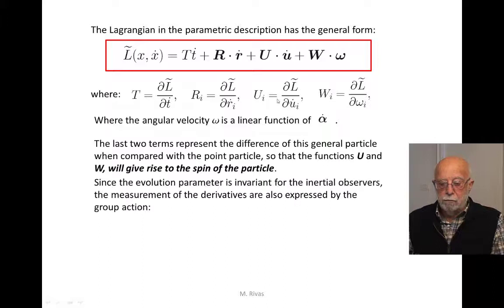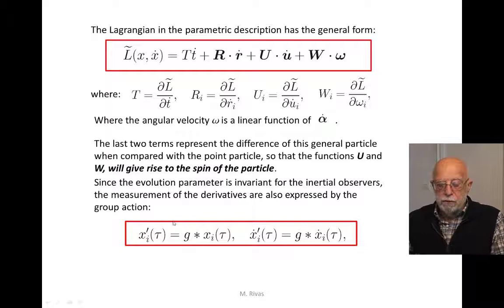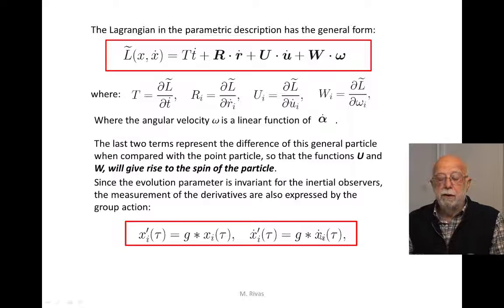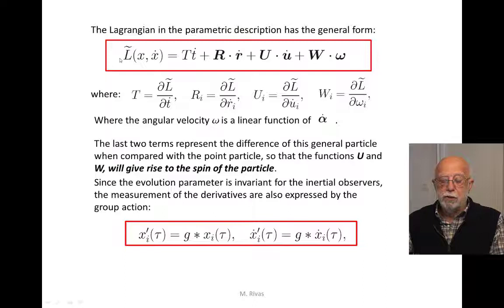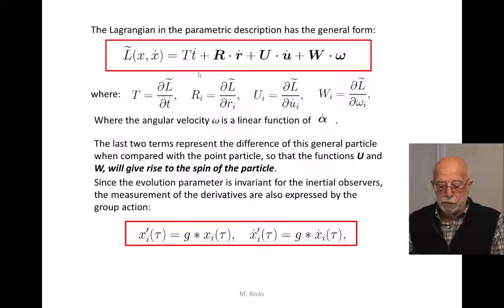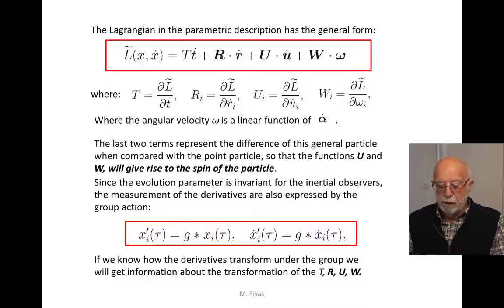If we know how the different kinematical variables transform among inertial observers, and since the tau parameter is invariant, by taking the tau derivative of those expressions we get how every pair of inertial observers relate their measurements of the tau derivatives of all kinematical variables. In particular, under the Poincaré group the Lagrangian is an invariant function, and therefore if we know how t-dot, r-dot, u-dot, and omega transform, we will get information about how these observables transform between inertial observers and therefore about their structure.